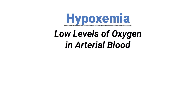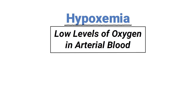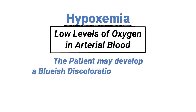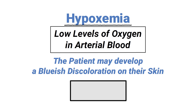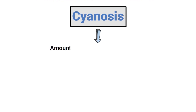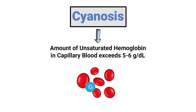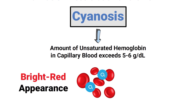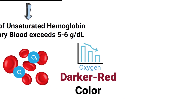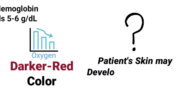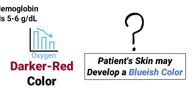Hypoxemia refers to low levels of oxygen in arterial blood. When this is the case, the patient may develop a bluish discoloration on their skin, known as cyanosis. This abnormality typically becomes visible when the amount of unsaturated hemoglobin in capillary blood exceeds 5 to 6 grams per deciliter. Blood carrying oxygen molecules has a bright red appearance; if oxygen levels are low, the blood has a darker red color, which explains the bluish skin discoloration.